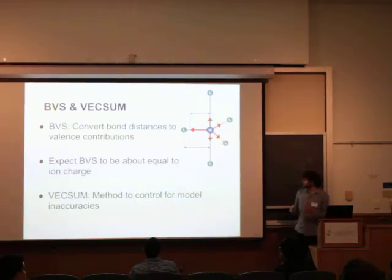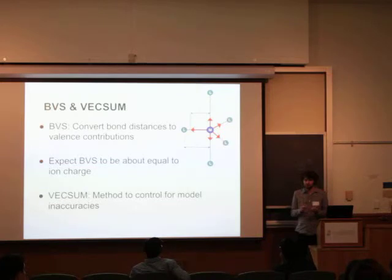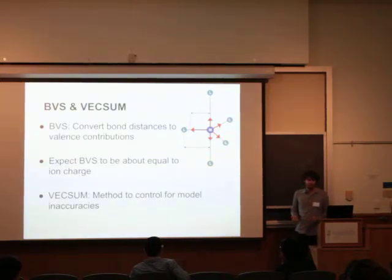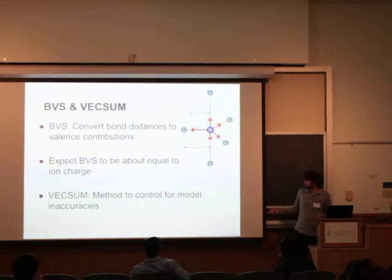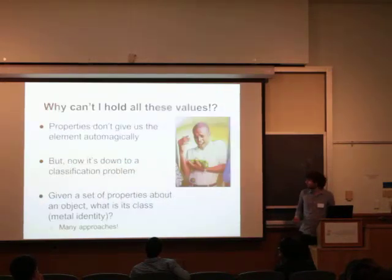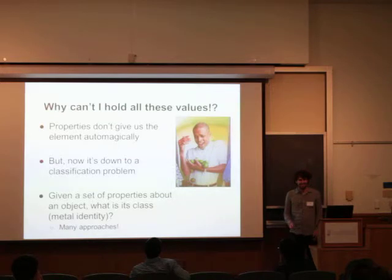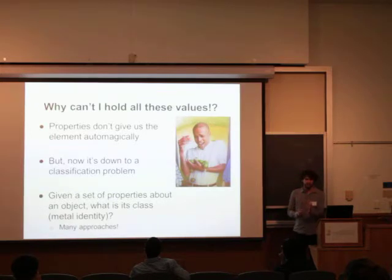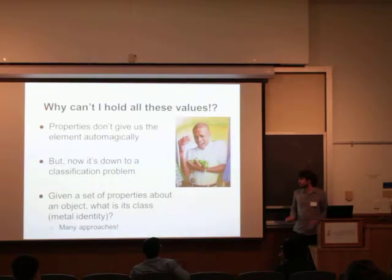Through a simple mathematical formula, you can turn those distances into a value that you should expect to equal the charge — this is bond valence. If it doesn't match, you can potentially rule out certain identities for that site. This is dependent on how well your model is currently built, so we have a second value which controls for accuracy. We get a bunch of numbers, but these don't tell us what a site is — we have a bunch of values that need to be turned into one final identity. That's a classification problem, a well-studied problem that has many different approaches.